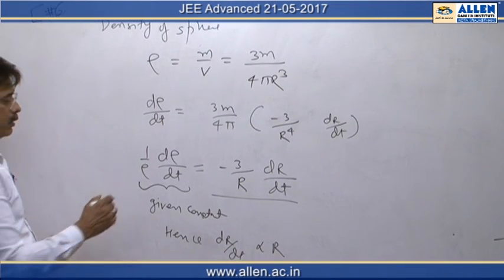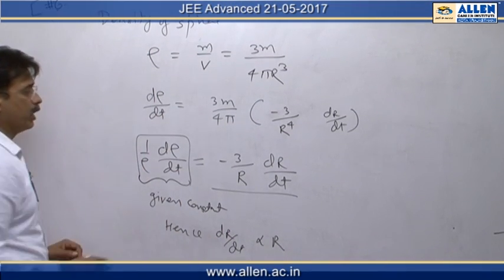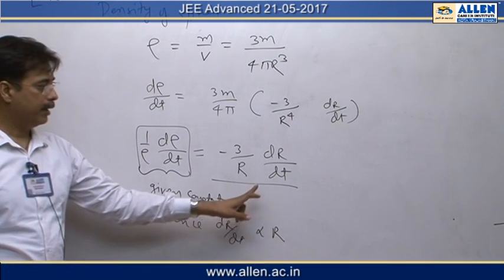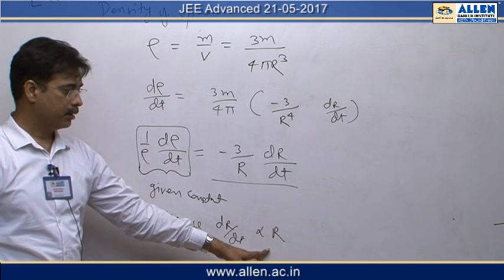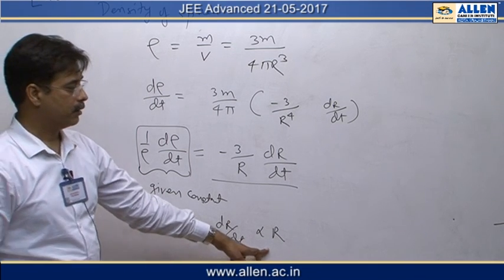And according to the question this term is given to be constant, so dr by dt comes out to be proportional to r radius, so our answer is c.